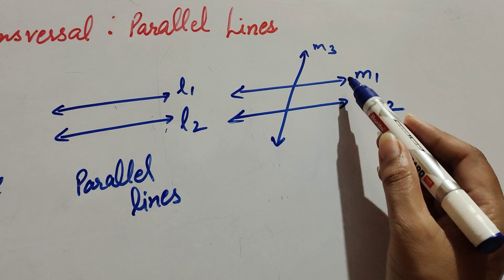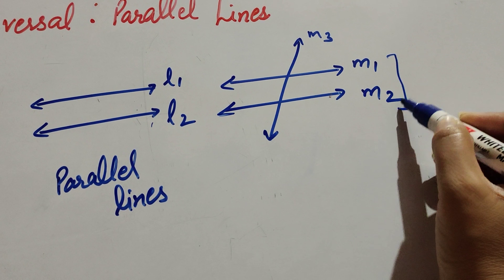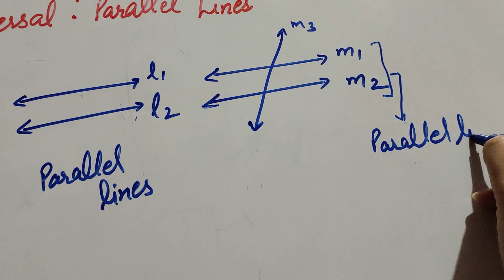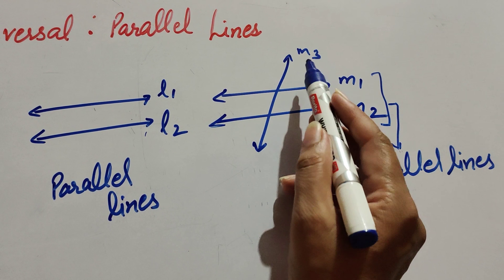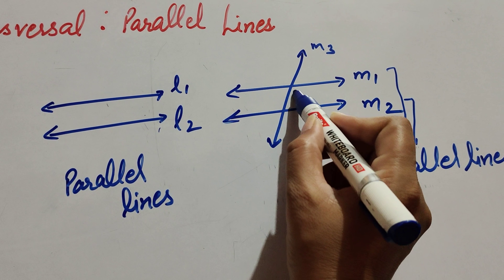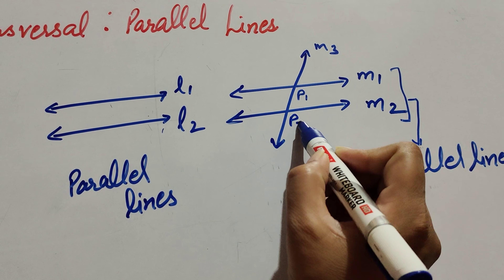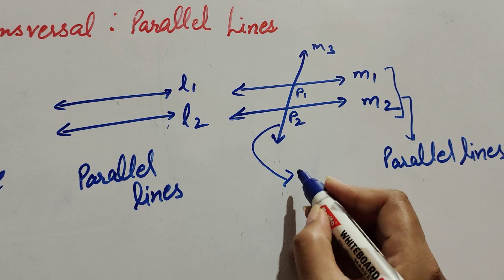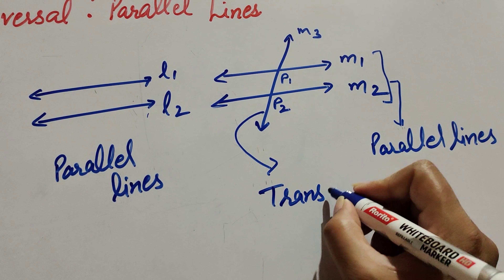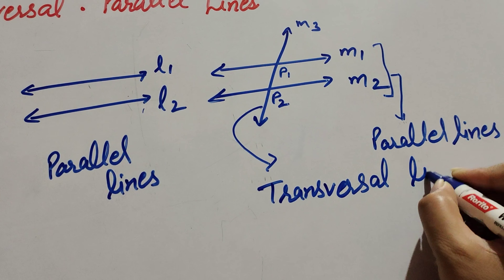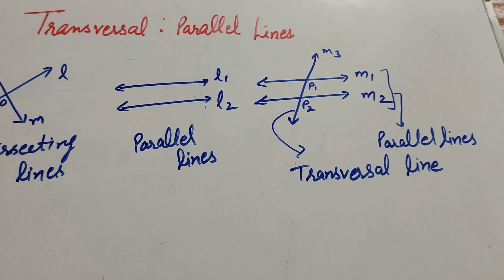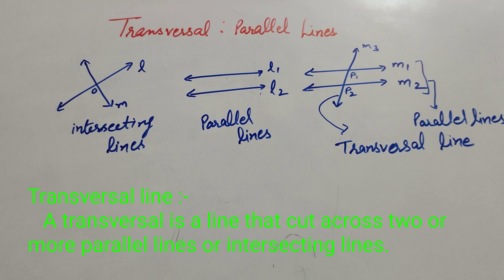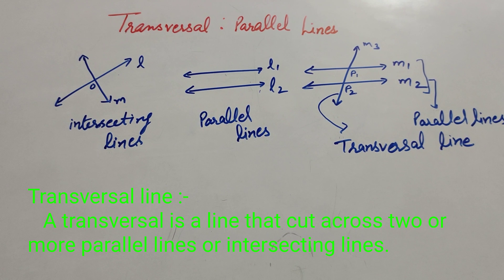In this figure there are three lines m1, m2, and m3. m1 and m2 are a pair of parallel lines. Line m3 is intersecting line m1 at point p1 and m2 at point p2. This line m3 is known as a transversal line. A transversal line is a line that cuts across two or more parallel lines or intersecting lines at two different points.